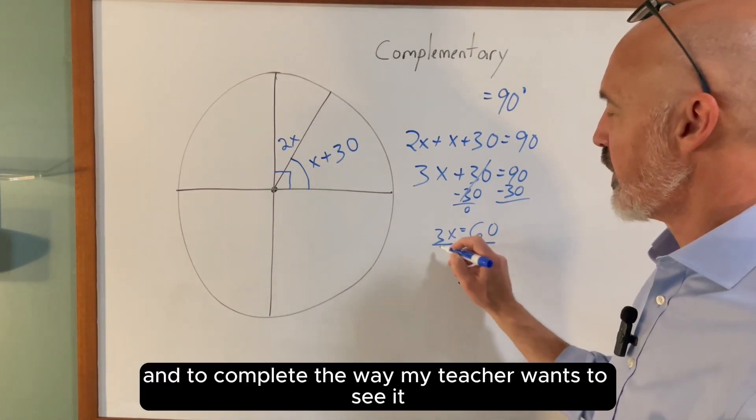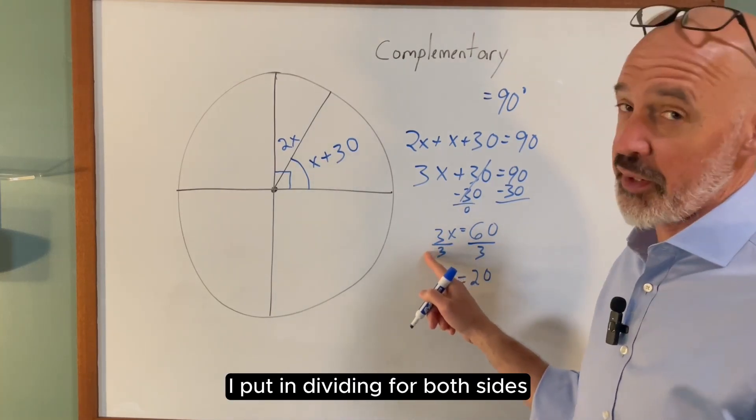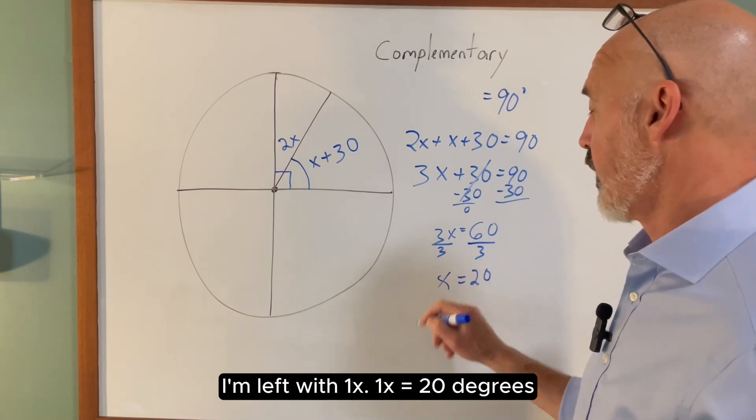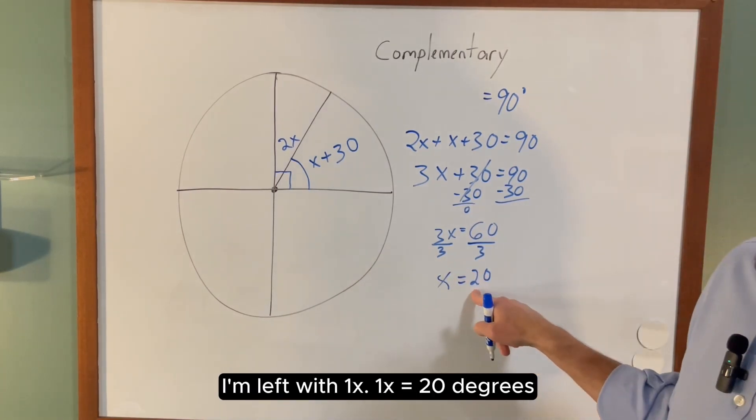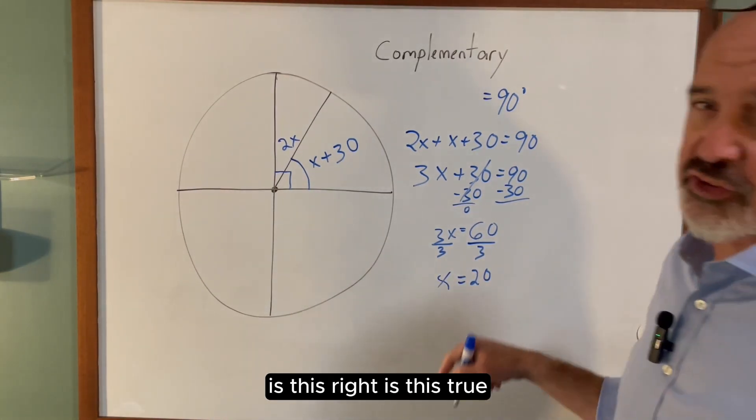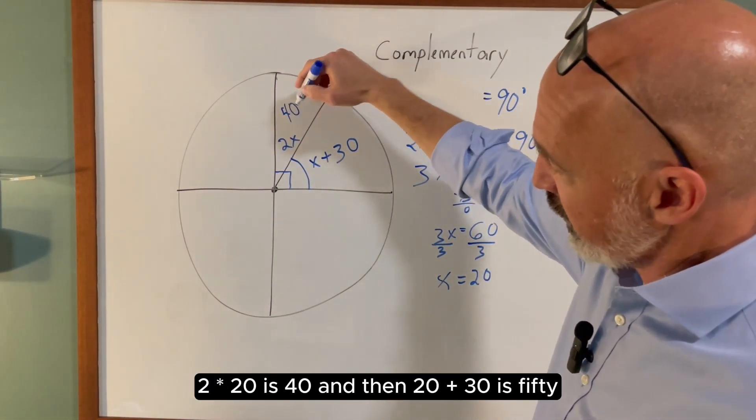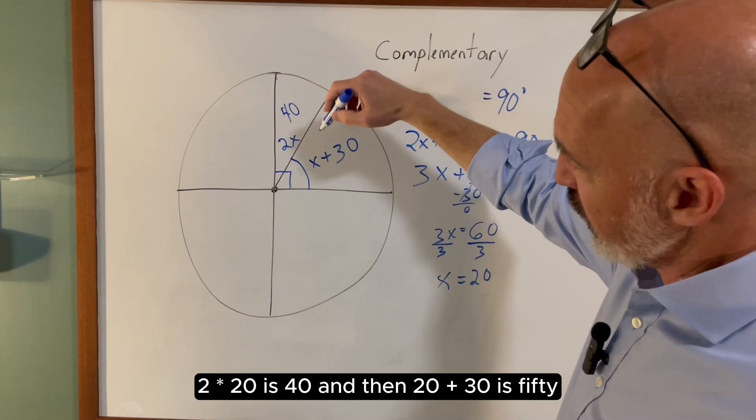And to complete the way my teacher wants to see it, I put in 'dividing both sides' because it's a balance. 3 divided by 3 is 1, I'm left with 1x. 1x equals 20 degrees. Is this right? Is this true? I can plug it back in here: 2 times 20 is 40, and then 20 plus 30 is 50.